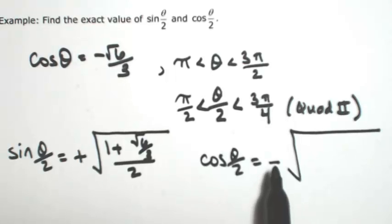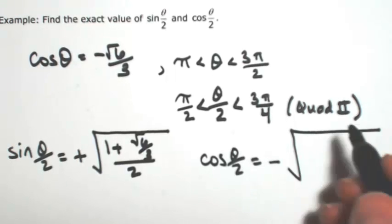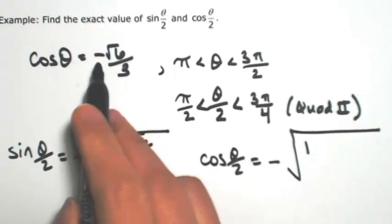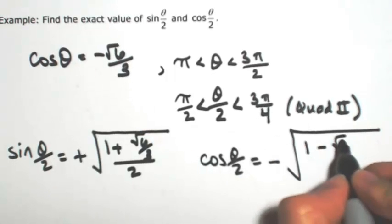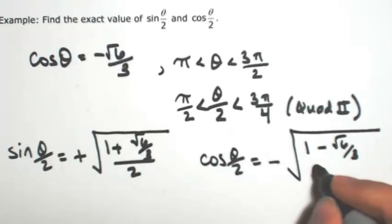For the cosine of theta over 2, again the negative out front. So then we're going to have 1 minus, I'm sorry, 1 plus, the negative, so it becomes minus. And then over 2.